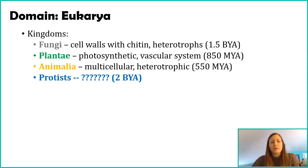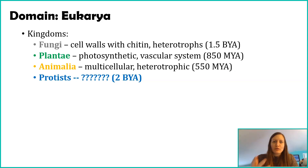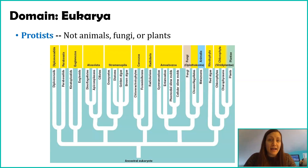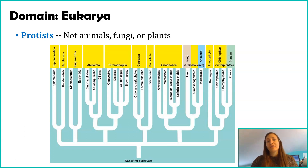This is where protists come in. Protists were the first eukaryotic organisms. Endosymbiosis created protists, or the eukaryotic organisms — this is happening about 2 billion years ago. I have all these question marks because the literal definition of a protist is: not an animal, not a fungi, and not a plant. There is no unifying characteristic that ties all of the protists together.